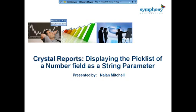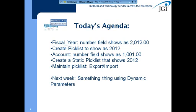What we're going to do today: we're going to take fiscal year, which is a number field that shows at 2,002 with the decimal places and zeros behind it, but one shows 2012. Then I'm going to do the exact same thing with the account field — a little more with that because it takes more to maintain that field once we bring it into our pick list to export and import it. We're going to do the same thing using dynamic parameters next week.